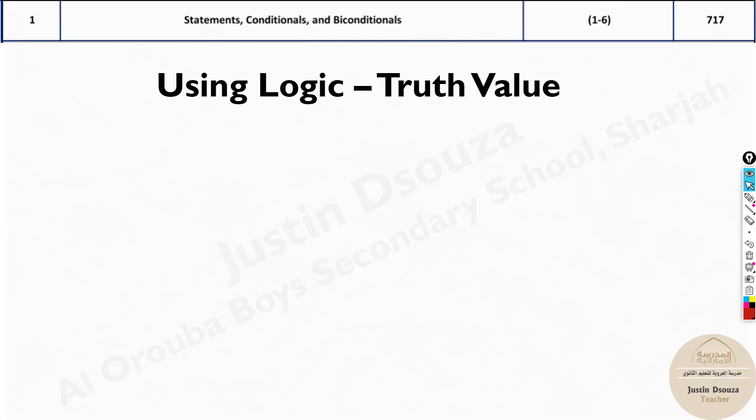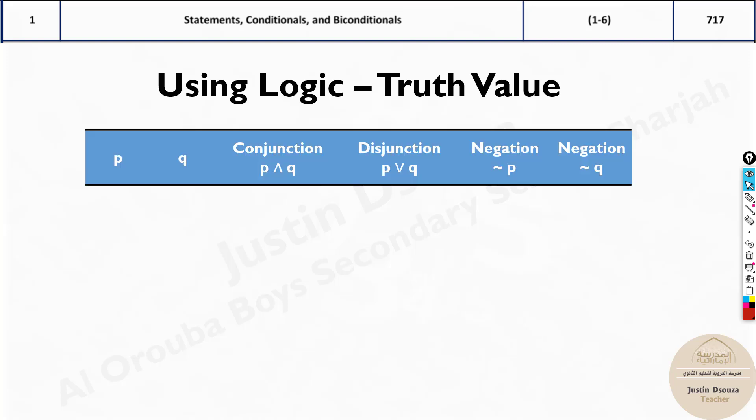Here before we begin, let's look into the truth table, that is logic truth values. The values are given like this. These are the formulas. What exactly are they? What are these conjunction, disjunction?